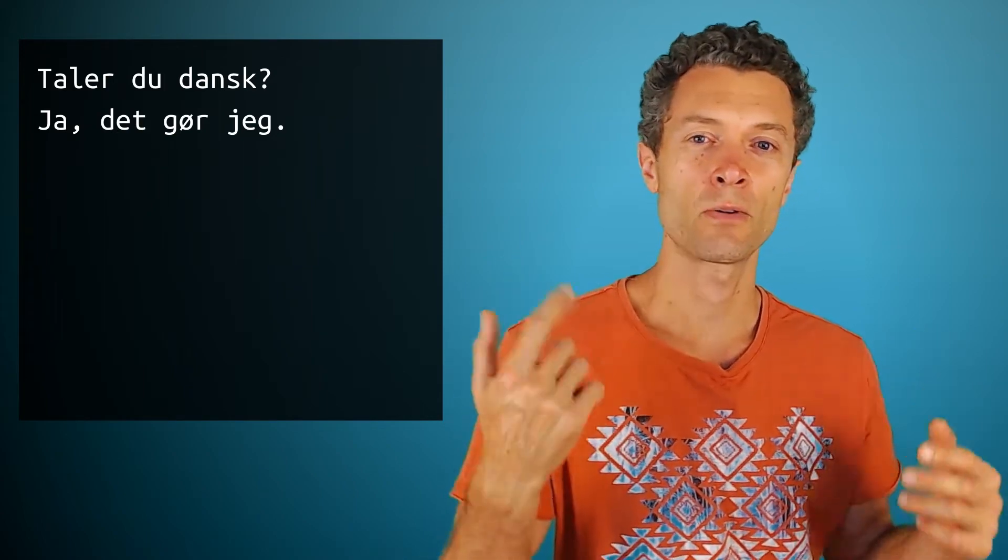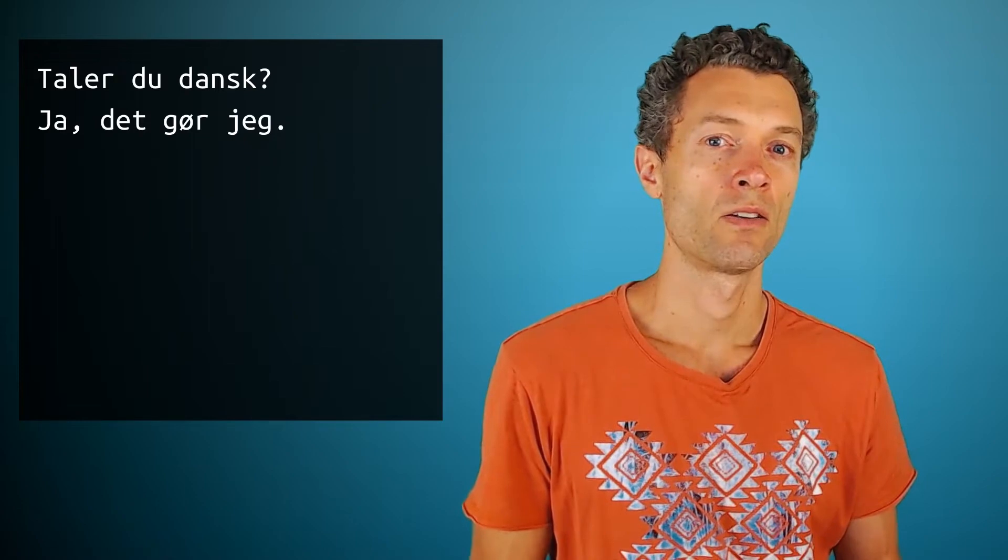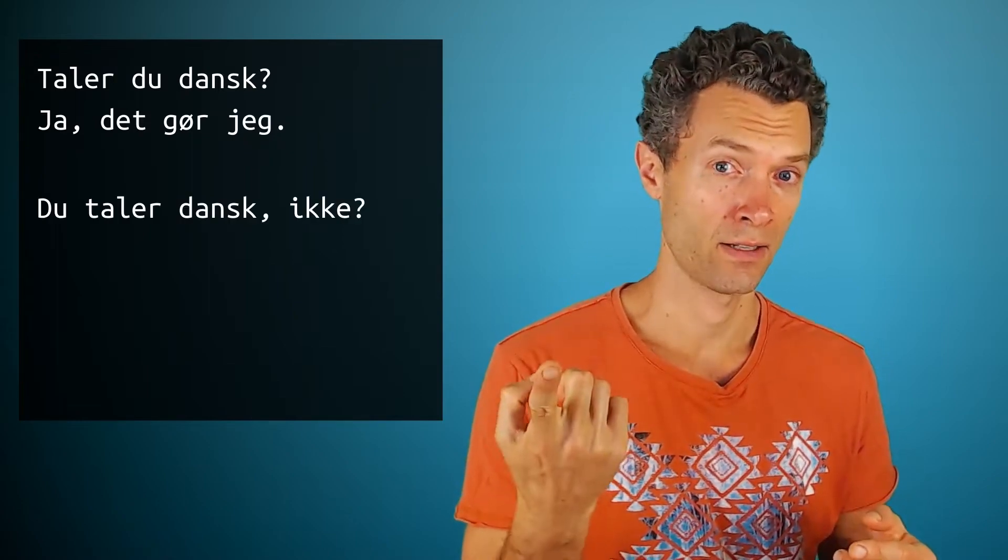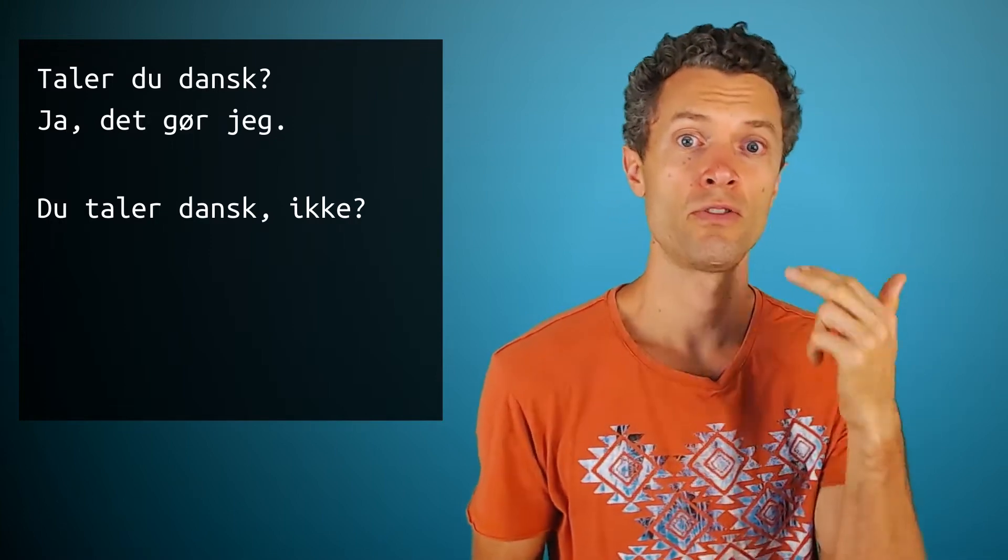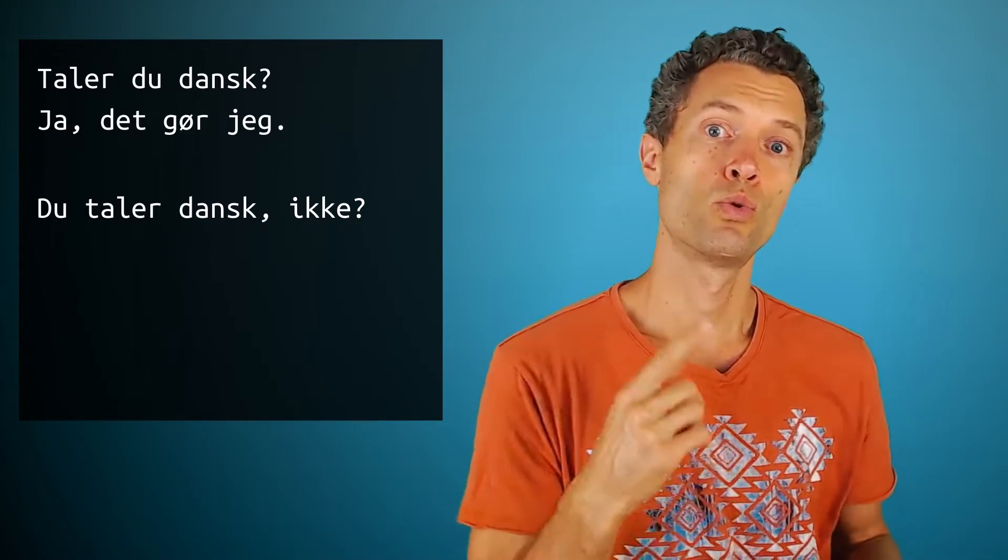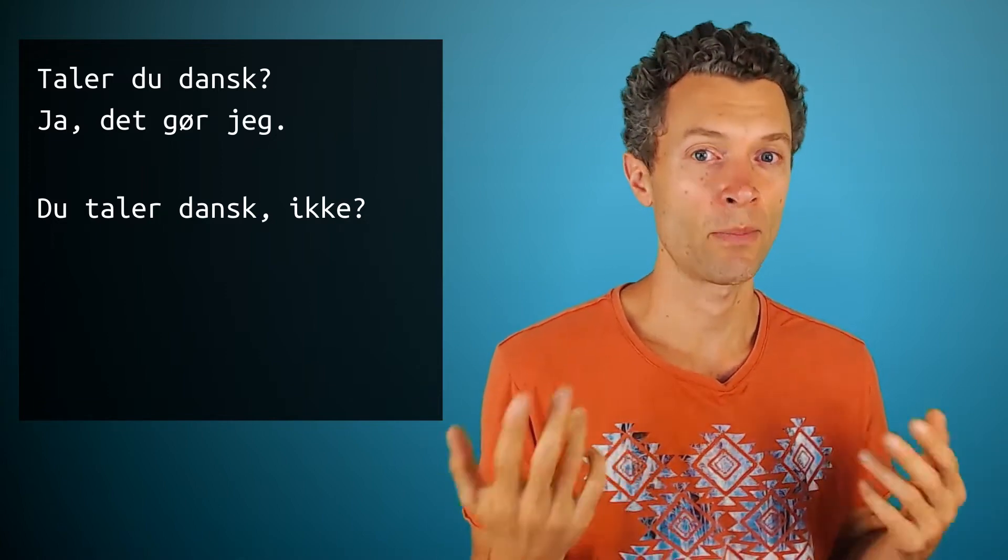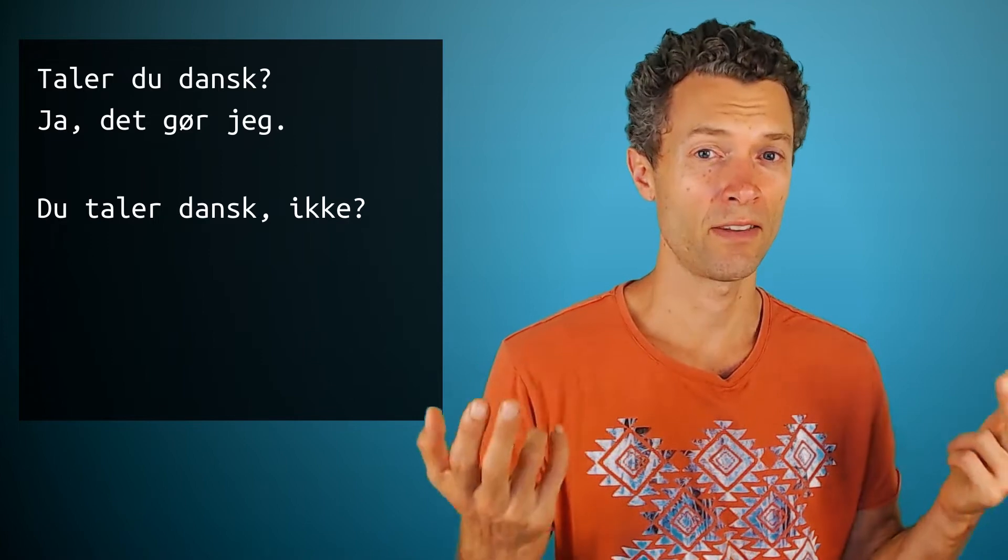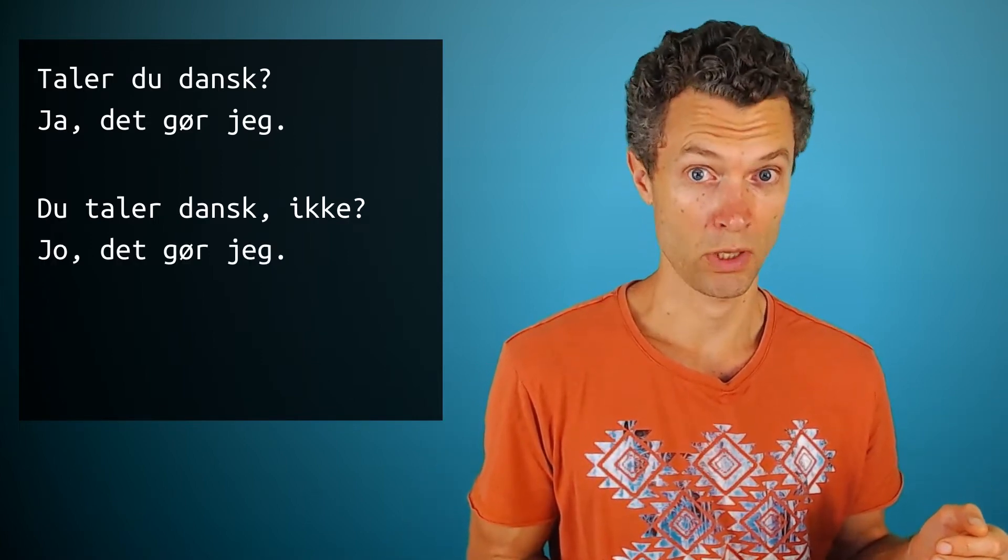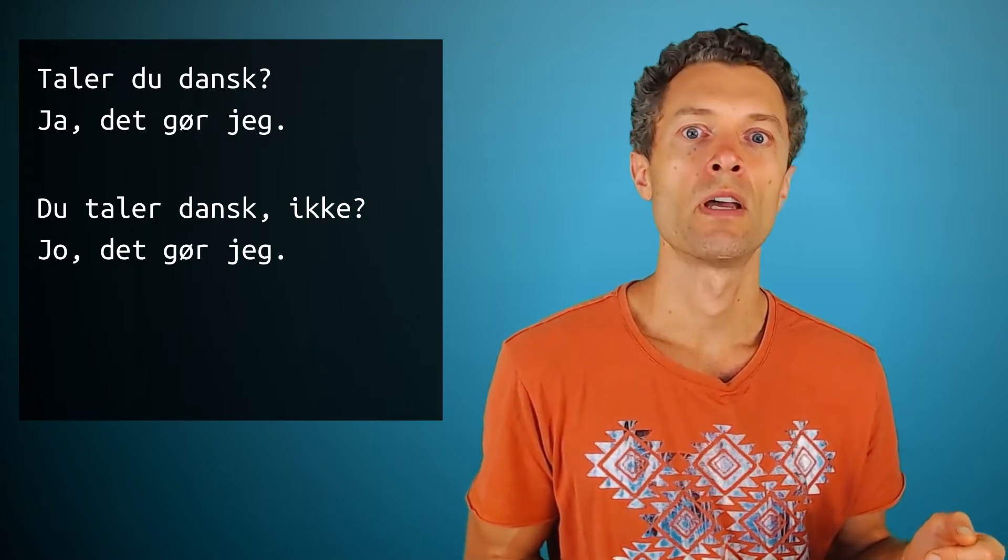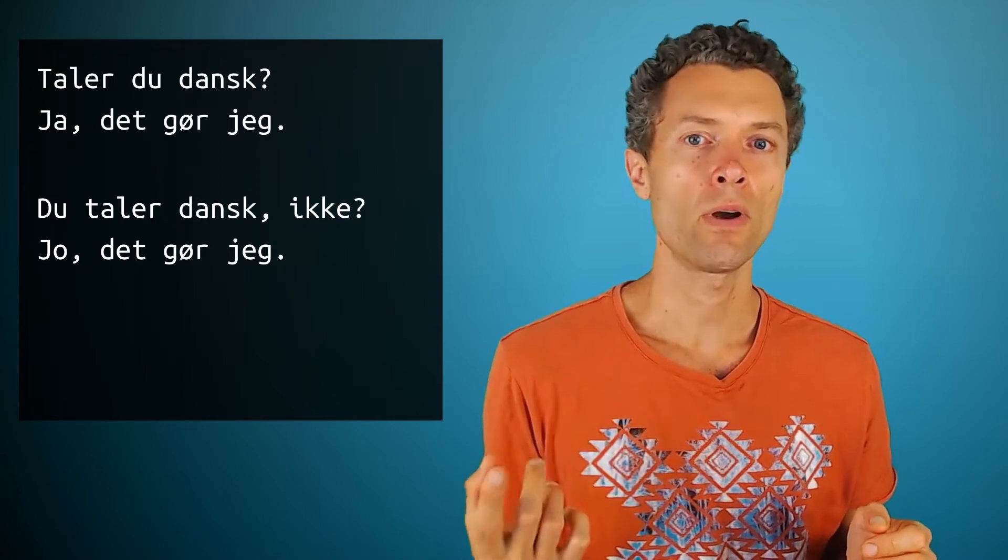And then let's take the second question with the right. You speak Danish, right? Du taler dansk, ik? So here we turn it around like in English. We have the subject first, you, du. Du taler dansk, ik. So, the ik is here the same as in English. And if we want to answer this question with, yes I do. Now we have to say, jo, det gør jeg. Jo, det gør jeg. So we have ja as an answer in the first question and jo in the second question.